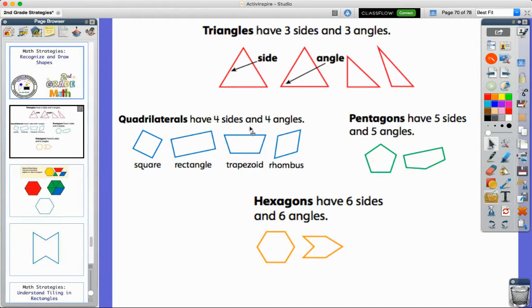We move on to the term quadrilateral, which might be new for you. Even though you've worked with squares and rectangles before, you probably didn't know they were part of a larger group called quadrilaterals. All quadrilaterals, just like triangles, have a certain number of sides and angles - four sides and four angles.